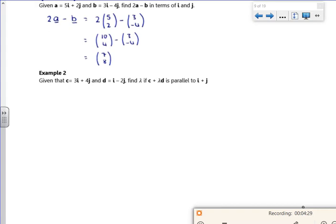So it says given that C is 3i plus 4j. So C is (3, 4). D is (1, -2). And it says there, find if lambda, if C plus lambda d is parallel to i plus j. So i plus j is just (1, 1).